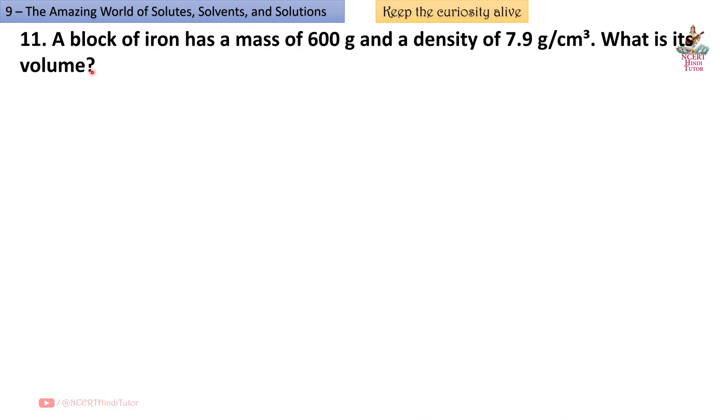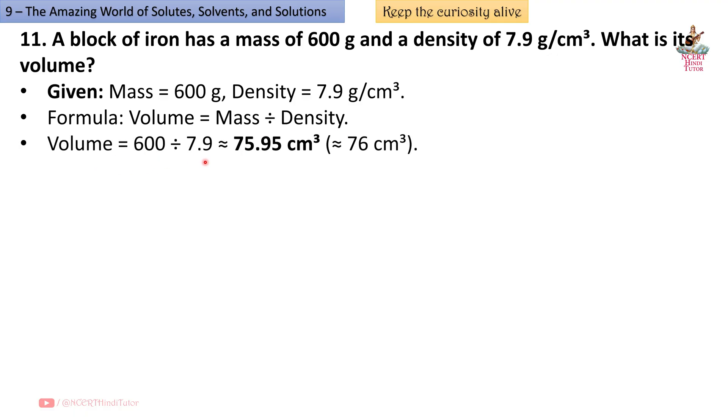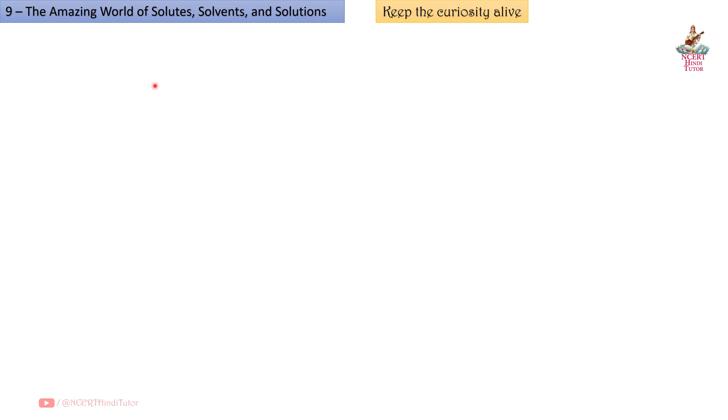Question 11: A block of iron has a mass of 600 g and a density of 7.9 g per cm cube. What is its volume? Answer: Given mass equals 600 g, density equals 7.9 g per cm cube. Formula: volume equals mass divided by density, so volume equals 600 divided by 7.9 equals 75.95 cm cube, approximately 76 cm cube. The volume of the iron block is about 76 cm cube.